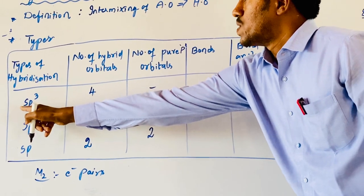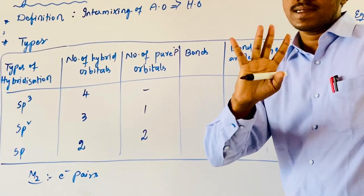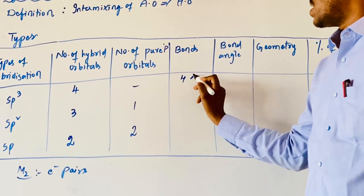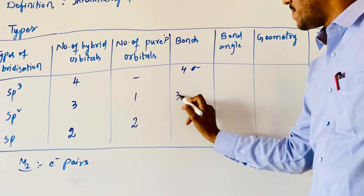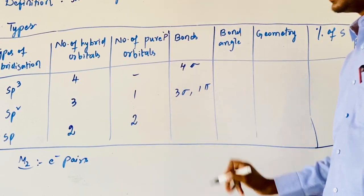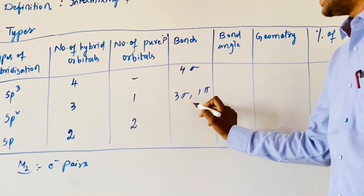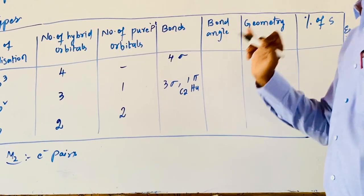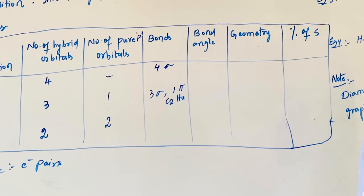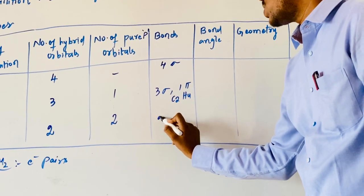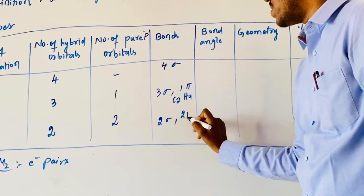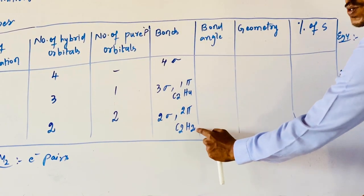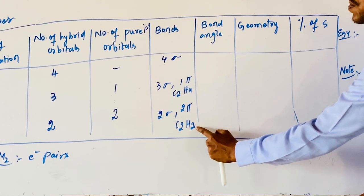Number of bonds: sp3 has 4 hybrid orbitals giving 4 sigma bonds — example is C2H6 (ethane). sp2 gives 3 sigma and 1 pi bond — example is C2H4 (ethylene). sp gives 2 sigma and 2 pi bonds — example is C2H2 (ethyne).